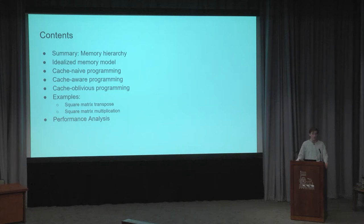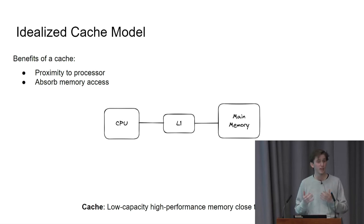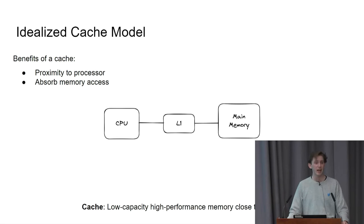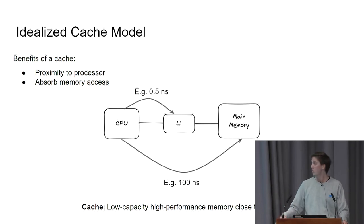We'll look at some performance analysis of how square matrix multiplication actually performs against the naive, non-cache aware implementation. The idealized cache model consists of a CPU, some number of layers of cache, and main memory. Main memory is RAM, and there are usually several layers of cache of increasing size between the processor and memory. In the idealized model, we have an L1 cache only and a main memory — a two-level memory hierarchy system. The cache serves a function of absorbing high-cost memory accesses and storing results so we can use them again.